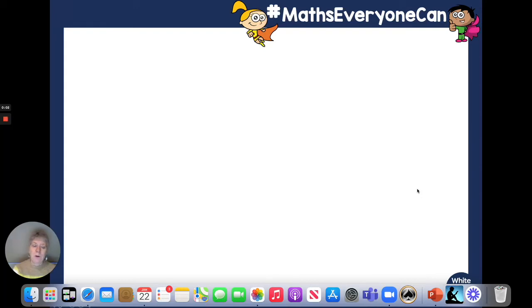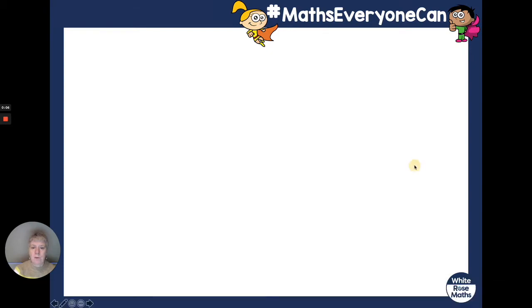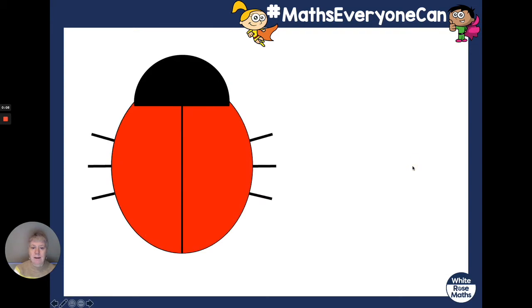Hello Reception, today we're going to use a ladybird to do ways of making eight. Now in your pack you've got a ladybird like this one. Can you go and get it now? And your counters, not the stickers yet, just your counters, because you're going to need them. Pause the video while you do that.